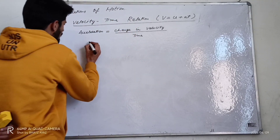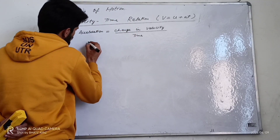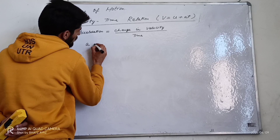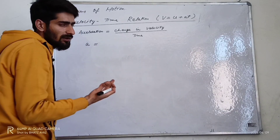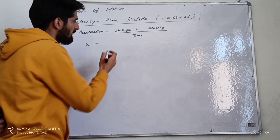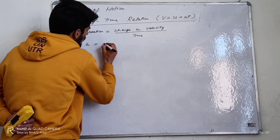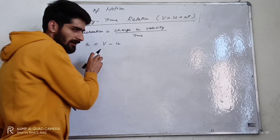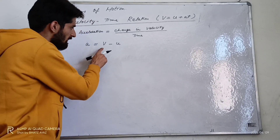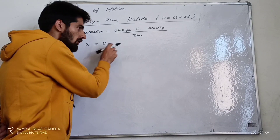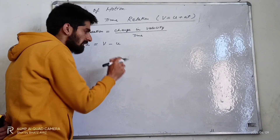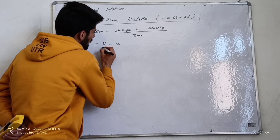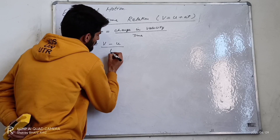So acceleration is equal to change in velocity, that is the final velocity minus the initial velocity, divided by t. Here v is the final velocity and u is the initial velocity, and t is the time.